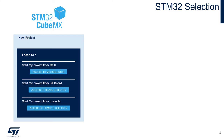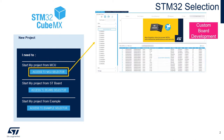Step 1 is to select your STM32 microcontroller. You can use our standalone STM32 MCU Finder or access the MCU Finder in STM32 CubeMX. To select a micro for custom board development or to peruse the extensive list of STM32 micros available, select the Access to MCU Selector option.